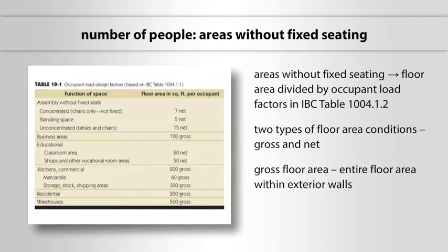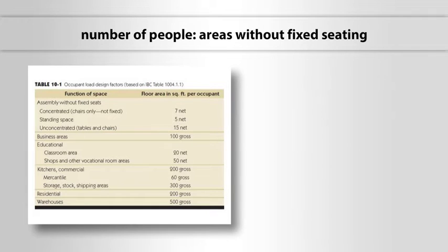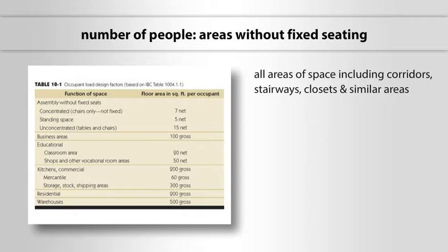Gross floor area is the entire floor area within the exterior walls, exclusive of vent shafts and courts. This area includes all areas of the space including corridors, stairways, closets and similar areas.